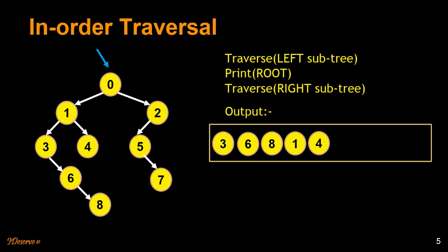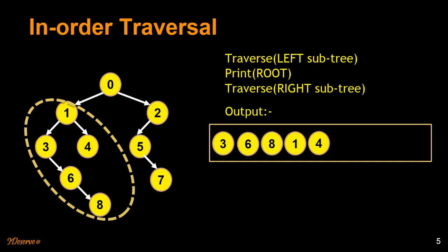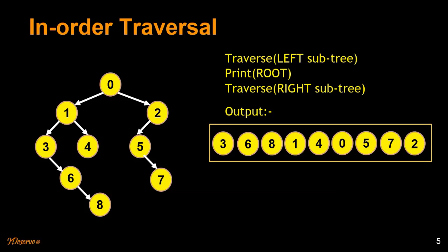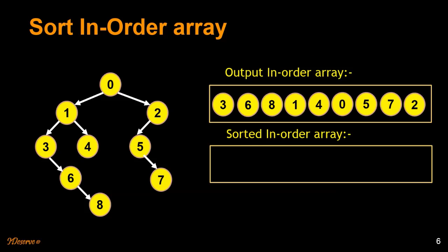Then we go back to 0. We see that the left subtree of 0 is traversed, so we print out 0 and traverse towards its right subtree. We follow the same rule for the right subtree of 0 and print out all the elements. So we got the inorder traversal array. The next step is to sort the inorder array. After sorting, the array looks like this.